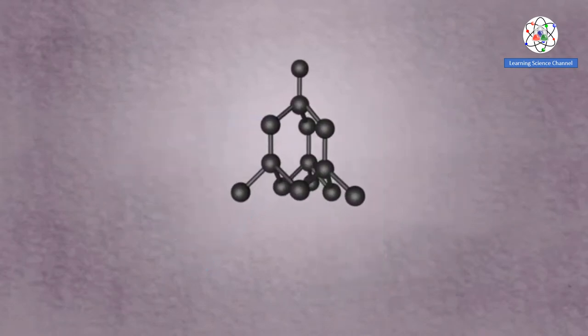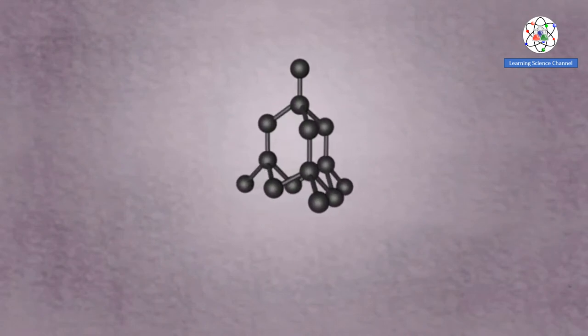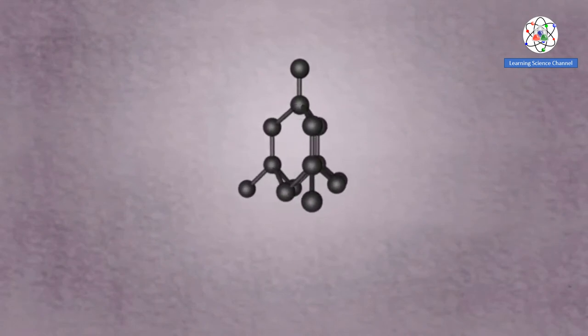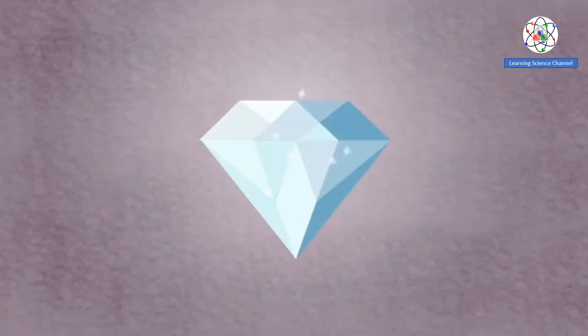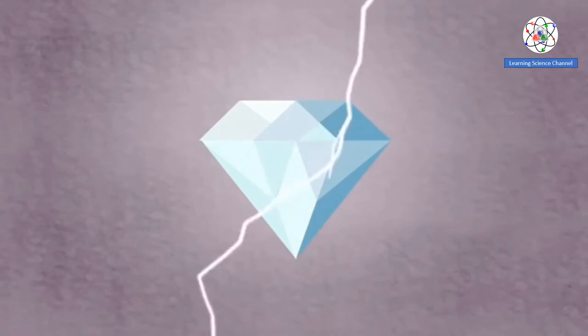These two substances are made of only carbon atoms, yet they exhibit very different physical and chemical properties. A diamond is very shiny, remarkably strong, and does not conduct electricity.